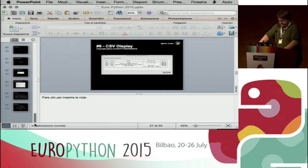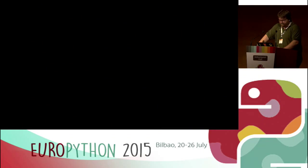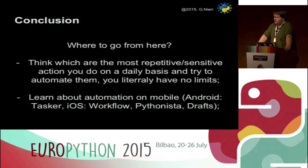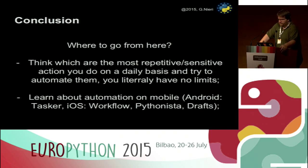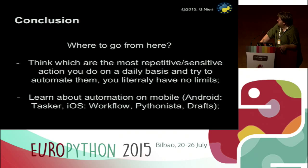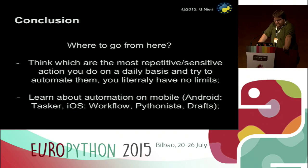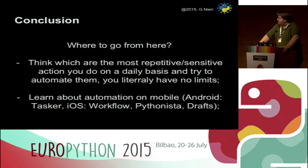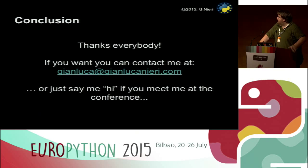These were just ideas of what you can automate. I showed you some needs I had and solved using automation, but you can do fundamentally whatever you want. The only thing to consider is how much time you spend repeating a task and then how you can automate it. As a last note: you can do the same thing on mobile devices — on Android you have Tasker, on iOS you have Workflow, Pythonista, and others. These tools can automate repetitive tasks on mobile devices too, and Pythonista and Tasker also support Python.